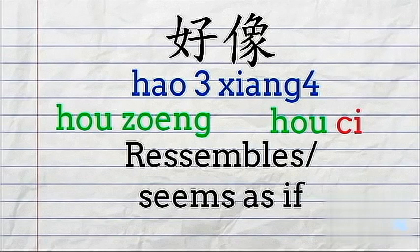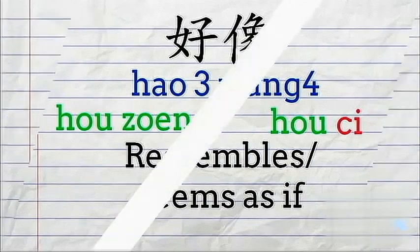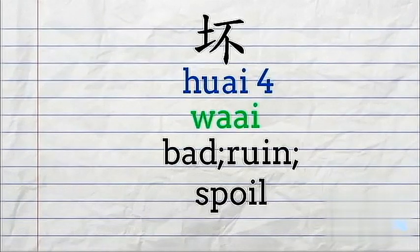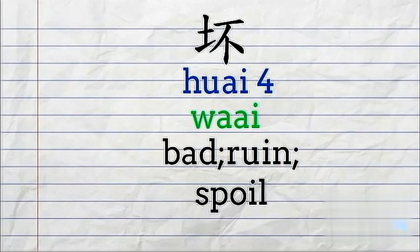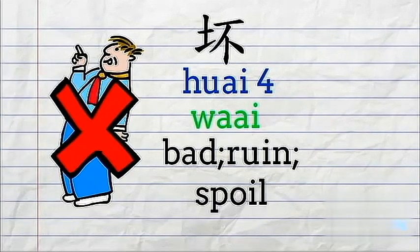好像 — resembles, it seems as if. 我的手机好像坏了. 坏 means 'bad', ruined or spoiled. So 坏人 — 'bad person' is 坏人.